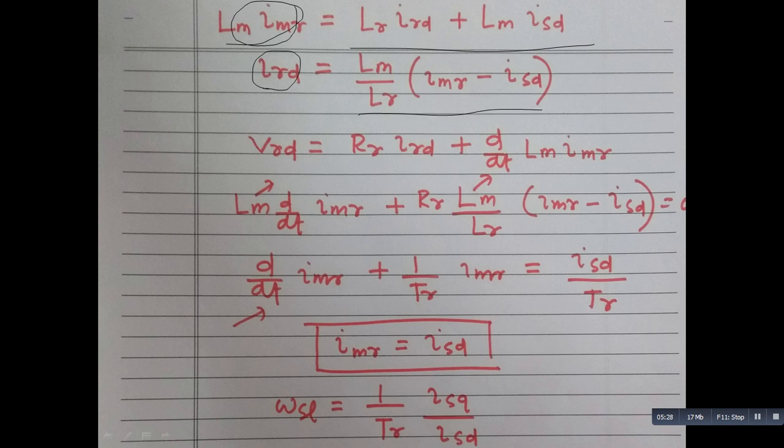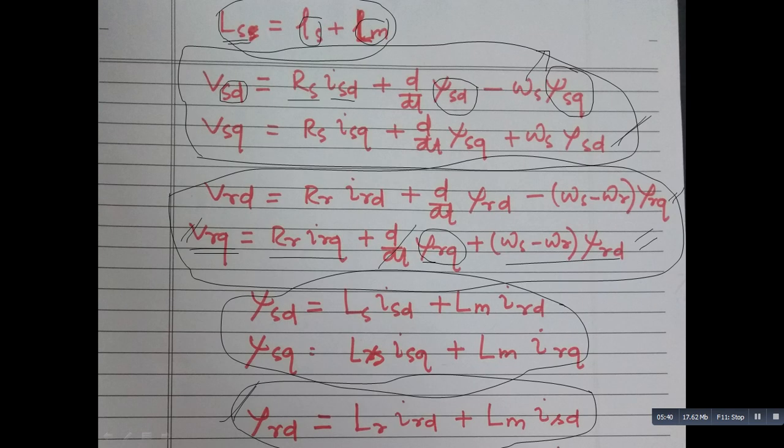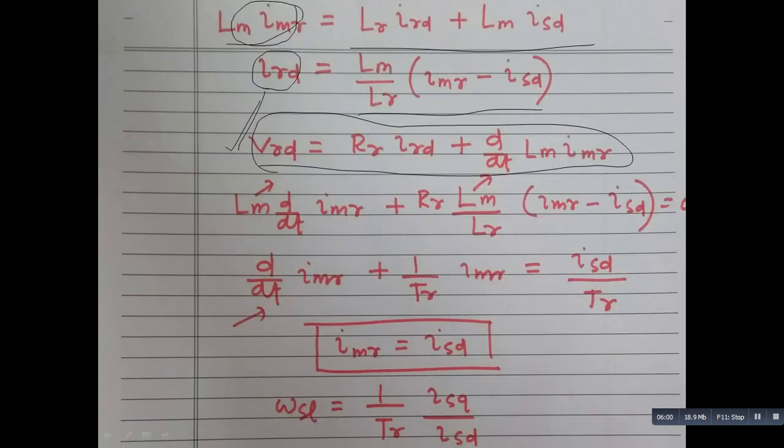Now, if you see the rotor direct axis voltage equation, so basically this will convert like this. So this is also short-circuited, rotor bars are short-circuited. So this is zero, and this psi_rq is zero. So this entire part vanishes. So only this part is remaining, and in place of psi_rd, I am putting L_m into I_mr. So that only I have written here.